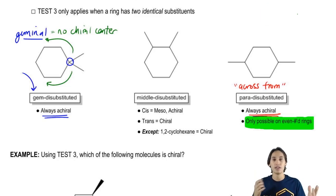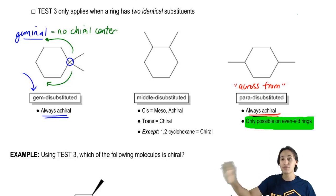If you have five or seven, it's not going to work, or three, it's not going to work. So cool. We've already knocked out two huge categories, gem-disubstituted, para-disubstituted. They're always achiral.